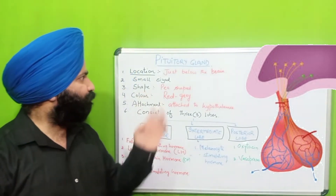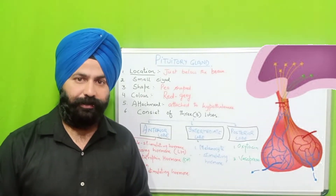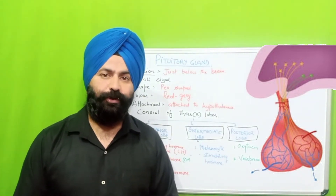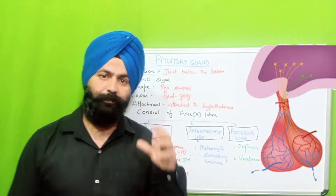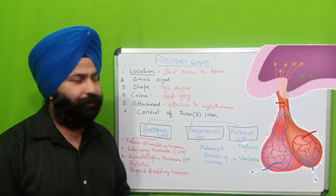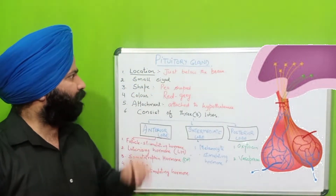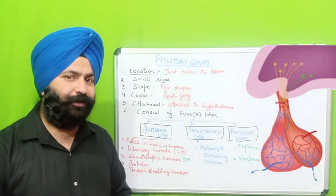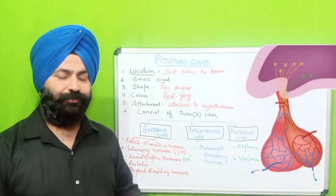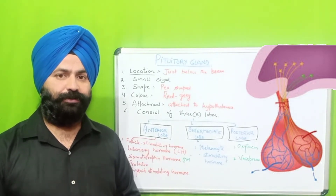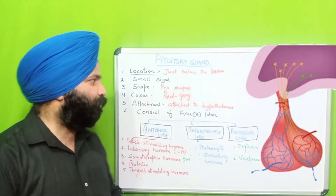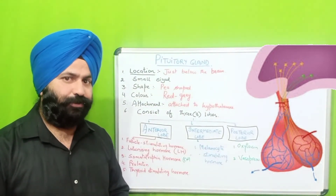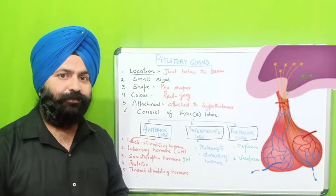The first gland is the pituitary gland — that is the master gland. The pituitary gland is located below the brain. As far as the position is concerned, it is present below the brain.